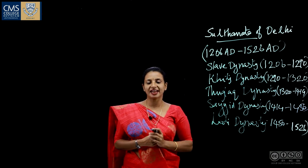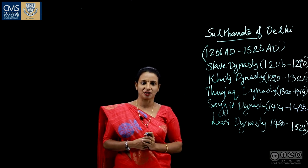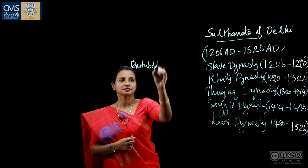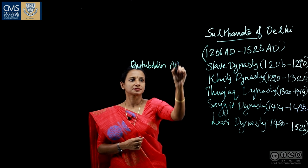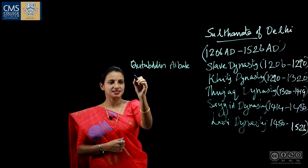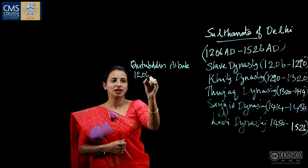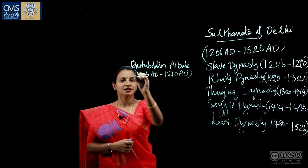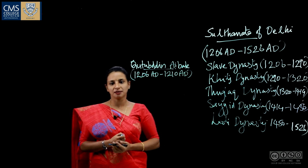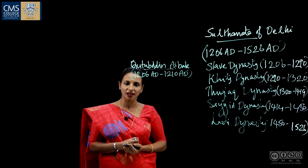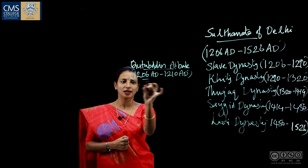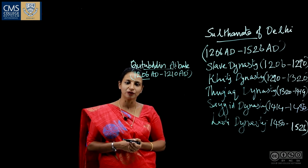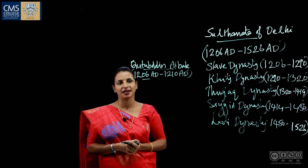The founder of the Slave Dynasty was Qutbuddin Aibak. He ruled from 1206 AD to 1210 AD. Qutbuddin Aibak was a slave of Muhammad Ghori, and when Muhammad Ghori died in 1206 AD, Aibak became powerful through conquest and matrimonial alliances.